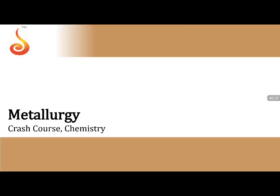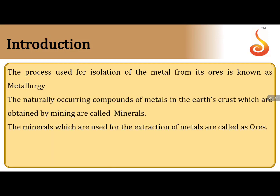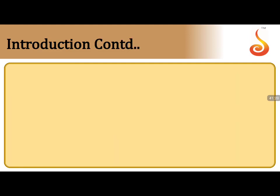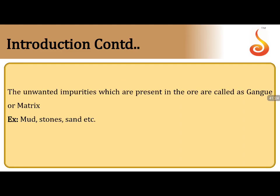Metallurgy: the process used for isolation of metals from their ores. Naturally occurring compounds of metals in the earth's crust obtained by mining are called minerals. The minerals used for profitable extraction of metals are called ores. Every ore is a mineral, but not every mineral is an ore. The unwanted impurities present in the ore (mud, stone, sand) are called gangue or matrix.